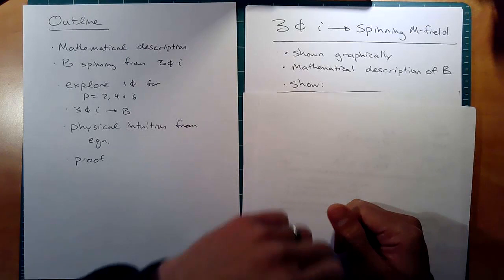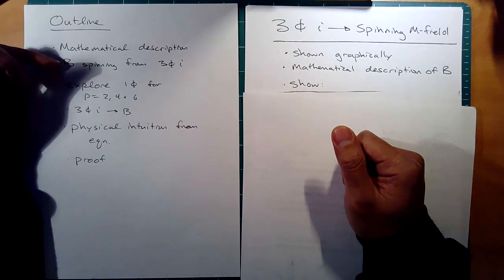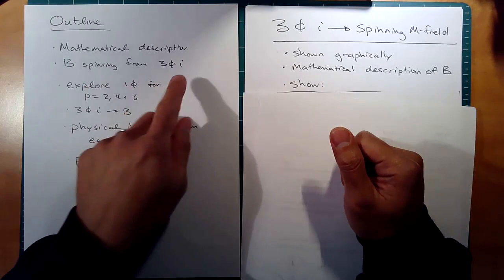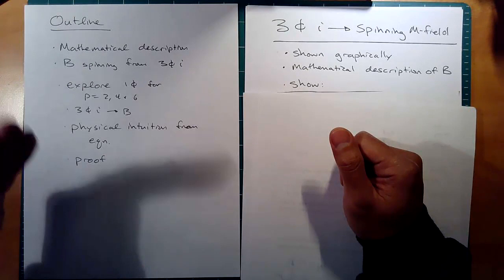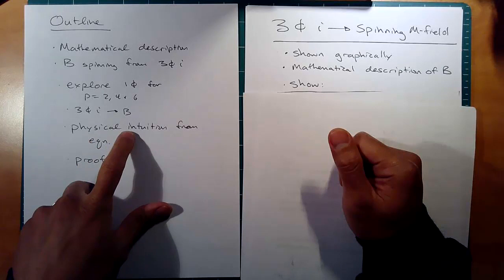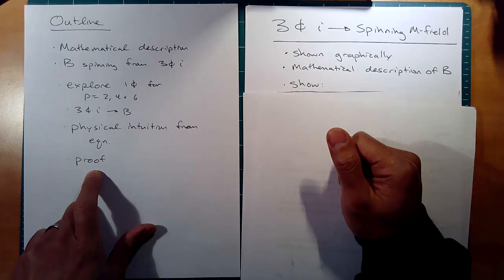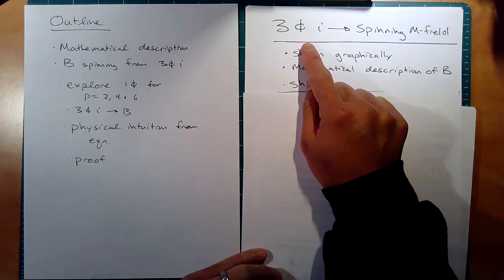Hi, this is ET350, lecture 19. Today we're going to talk about a mathematical description of flux density, how it relates to a spinning magnetic field, and how it comes from three-phase current. Before we get there, we'll look at single phase for p equals 2, 4, and 6, work our way into the equation, look at physical intuition we can gain from it, and finally, if you're still interested, we'll look at a proof.